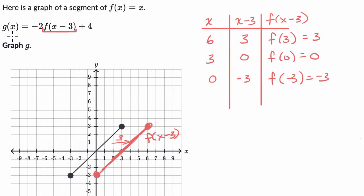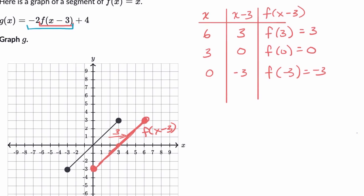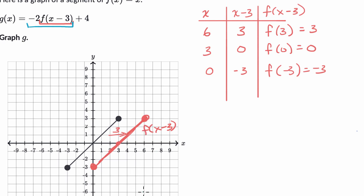Now let's think about what that looks like if we were to multiply it by negative two. We're just going to scale all of these values by negative two. When x is six, we were getting three before — multiply that by negative two, you're now going to be at negative six. And when we were at negative three before, multiplying by negative two gives us positive six. So this right over here is the graph of negative two times f of x minus three.